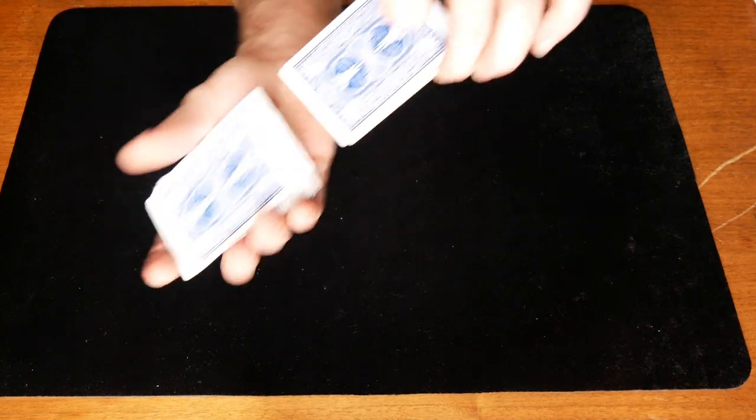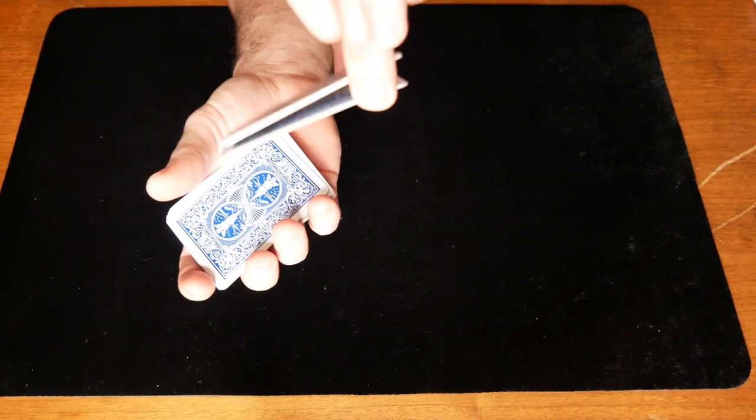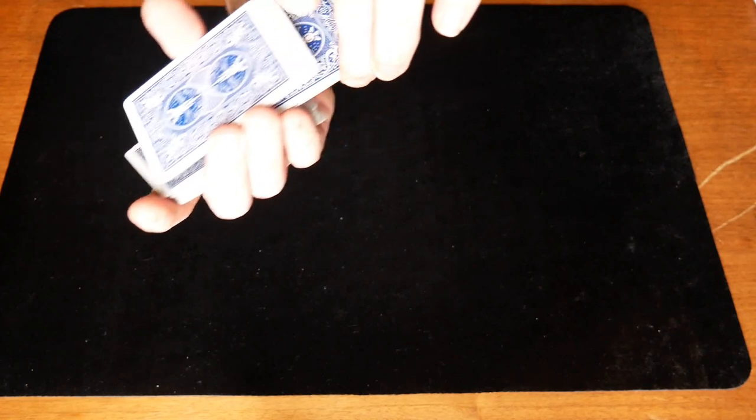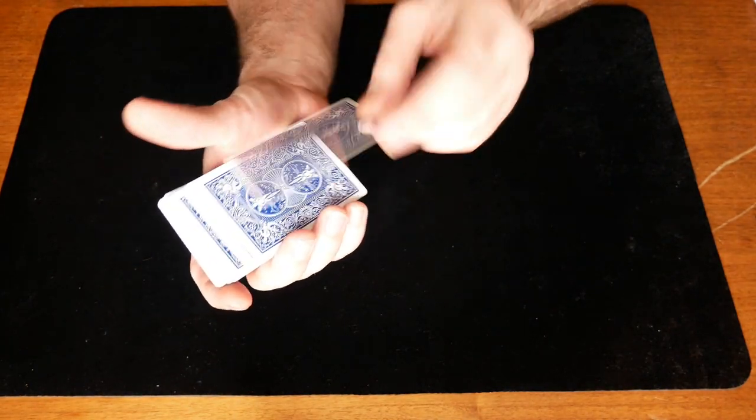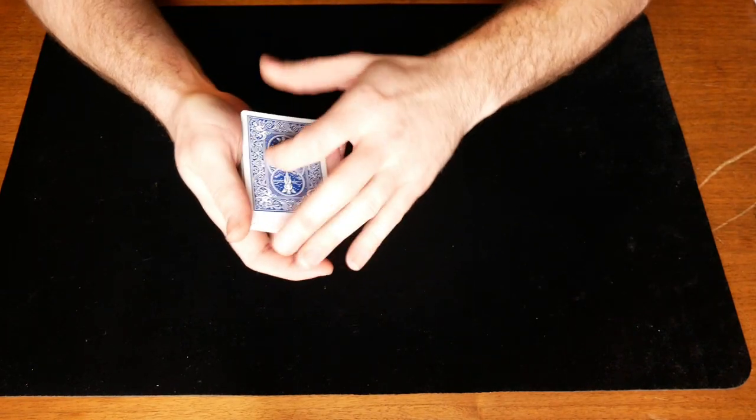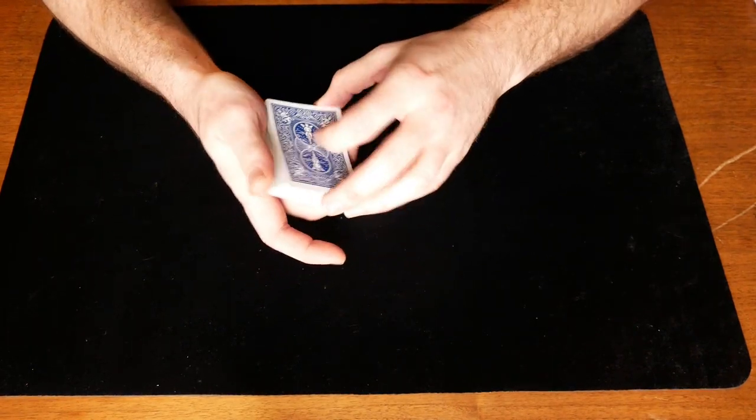And when you get to the bottom and you shuffle it all off, you simply take their packet and throw it on top. So the selected card is on top, right here. And then you perform the double lift showing them that their card is not on top.